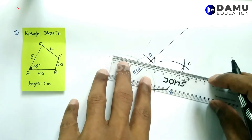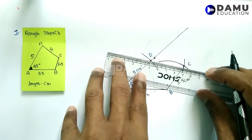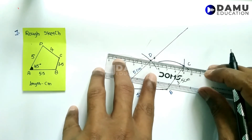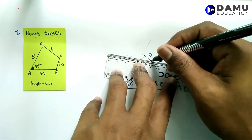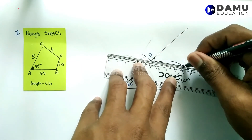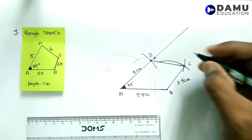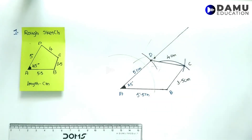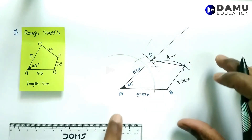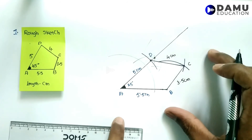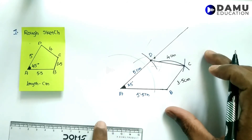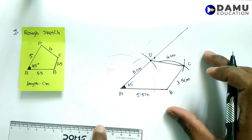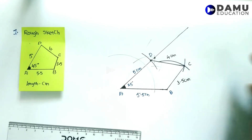Measuring DC, from 5 to 9 centimeters, gives exactly 4 centimeters. This is how we construct the given quadrilateral ABCD. Thanks for watching, please subscribe.